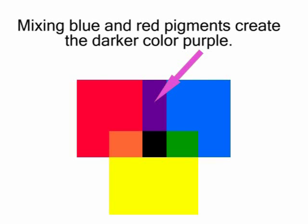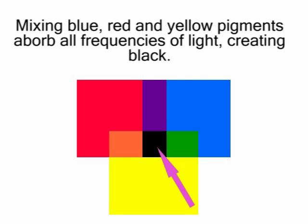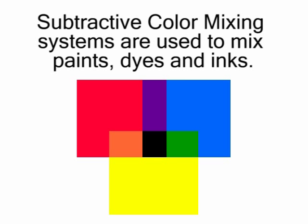If you continue to add more pigments of different colors, then more and more frequencies will be absorbed until eventually you'll get black. This process of subtracting color frequencies by adding additional pigments is known as subtractive color mixing.